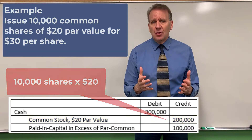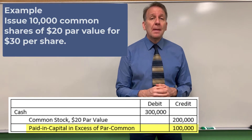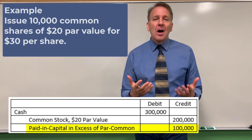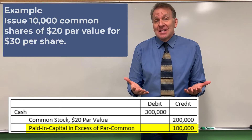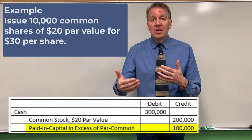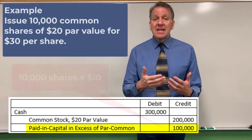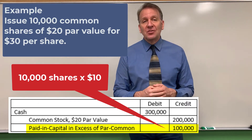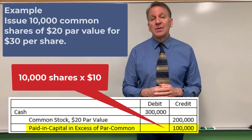Our journal entry hasn't balanced, so we need another $100,000 credit. That goes to the account called paid-in capital in excess of par — common stock. We're paying into the capital of the business in excess of par value — $10 per share in excess. So $10 times 10,000 shares gives us $100,000. That completes our journal entry for the issuance of this common stock.